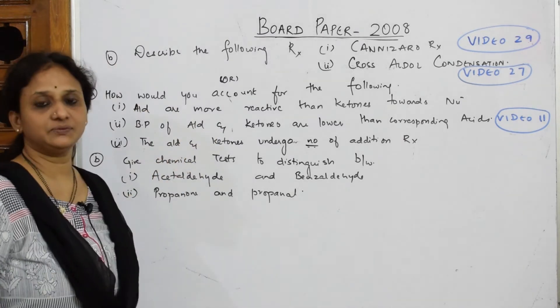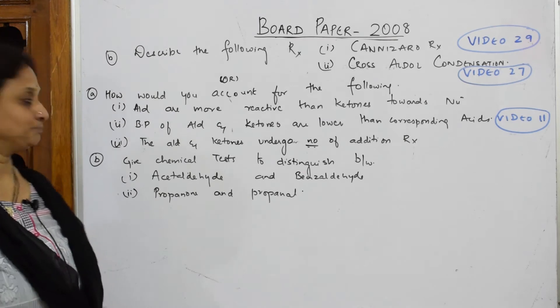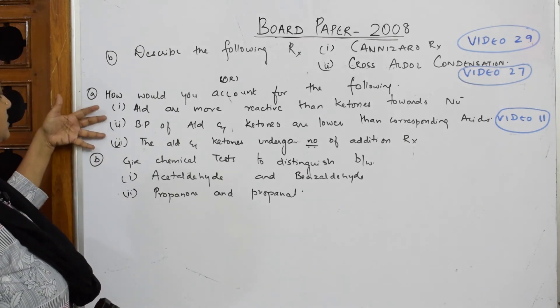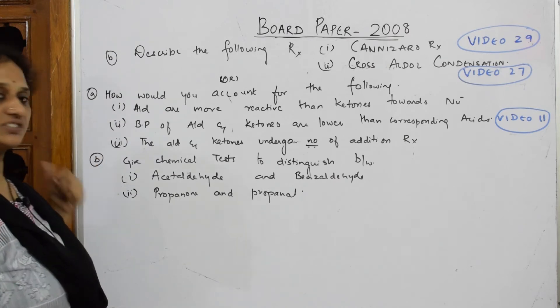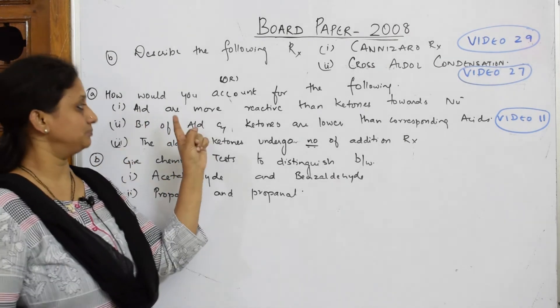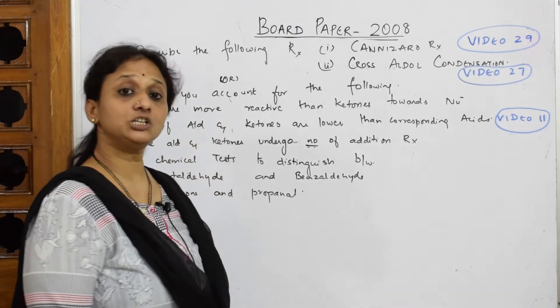They give us such types of questions you frequently see in your board paper. Account for the following - they want you to write the reason in one line. How many did they give you? This is a five marks question. They've divided three questions under part A and two questions under part B.